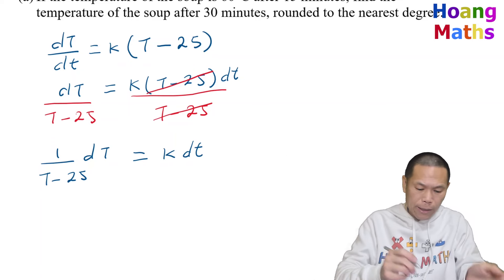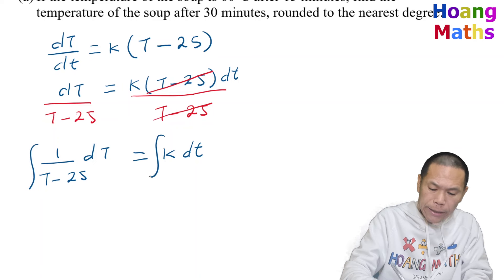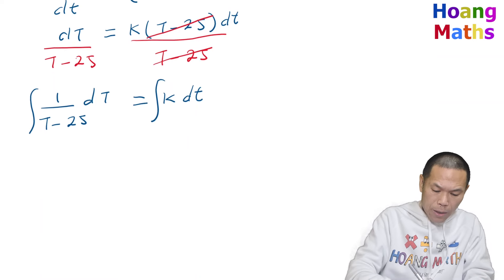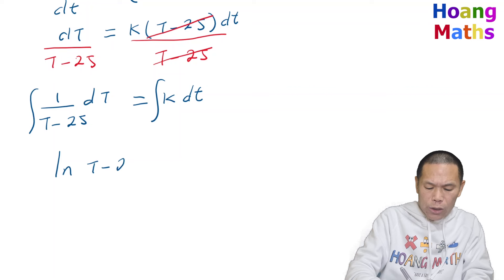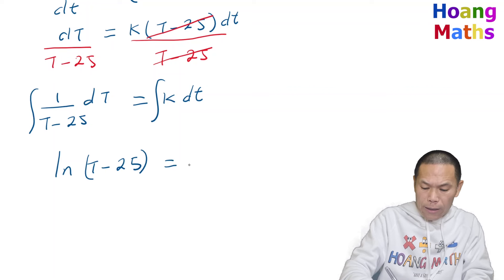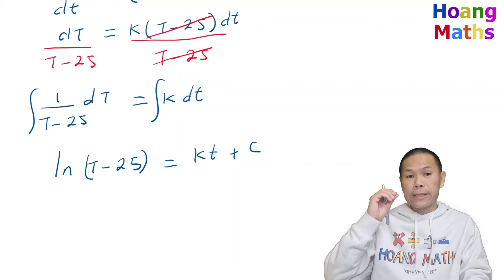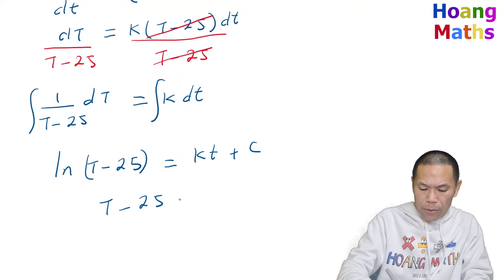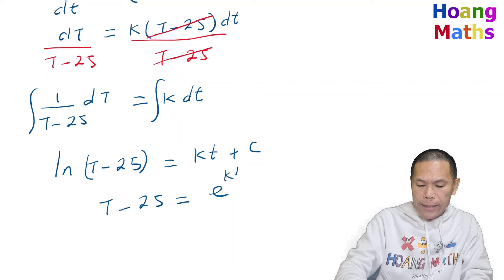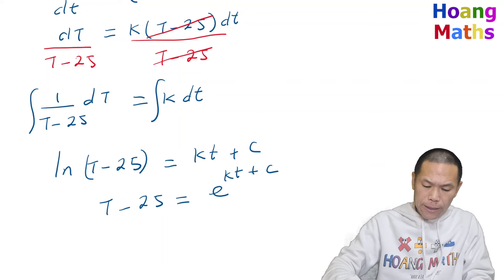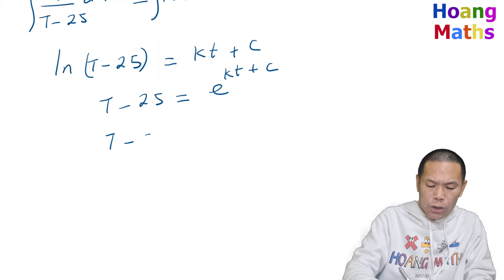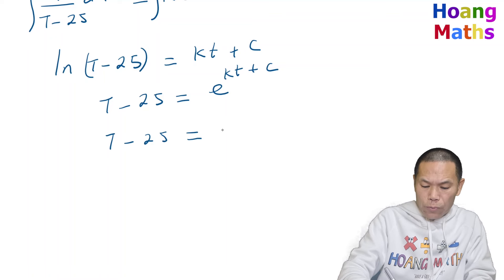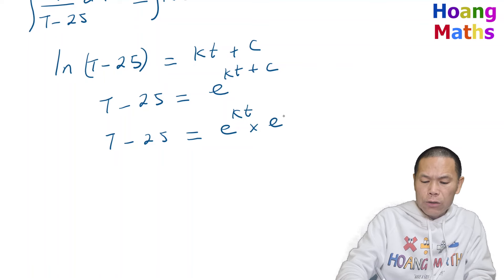Integrating both sides: the left-hand side gives ln|T minus 25| and the right-hand side gives kt. Don't forget to add the constant c. Taking the exponential of both sides: T minus 25 equals e^(kt + c), which equals e^(kt) times e^c.